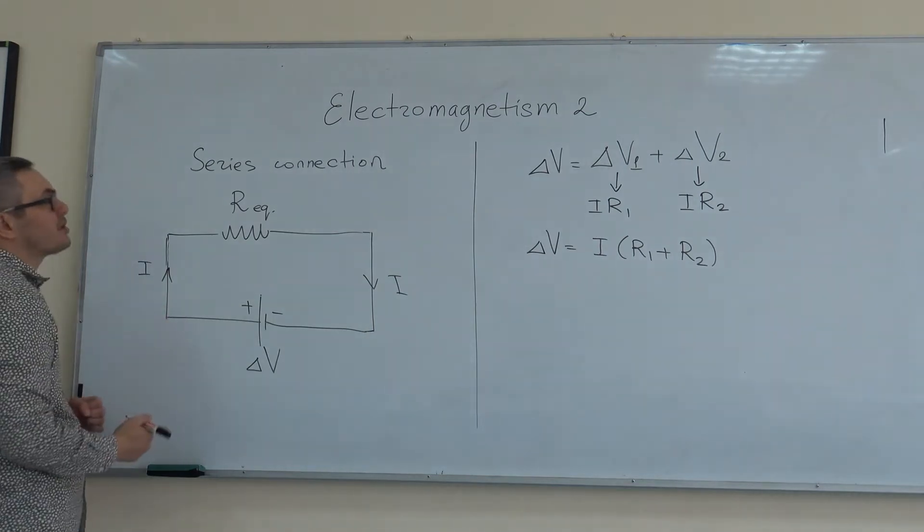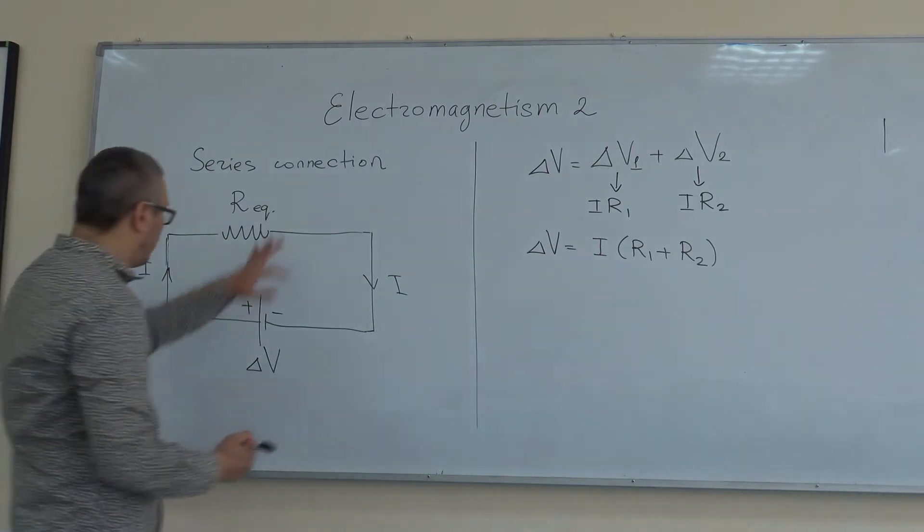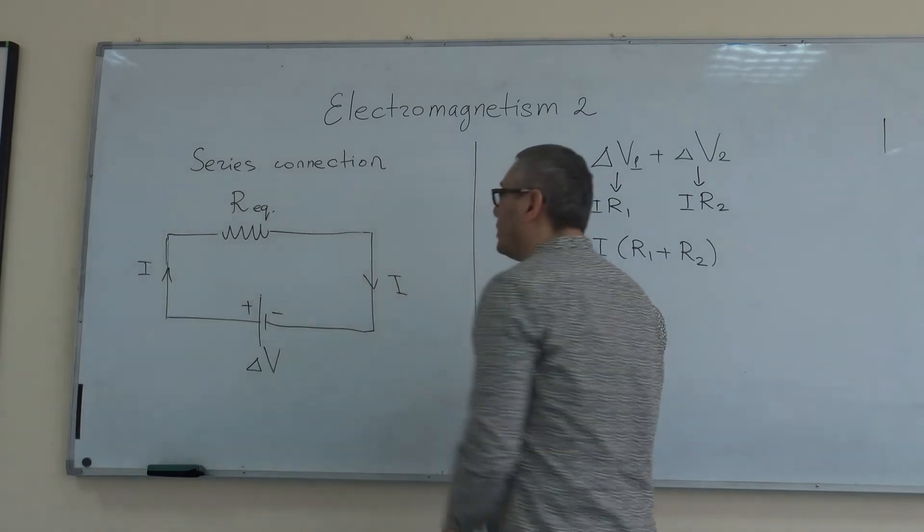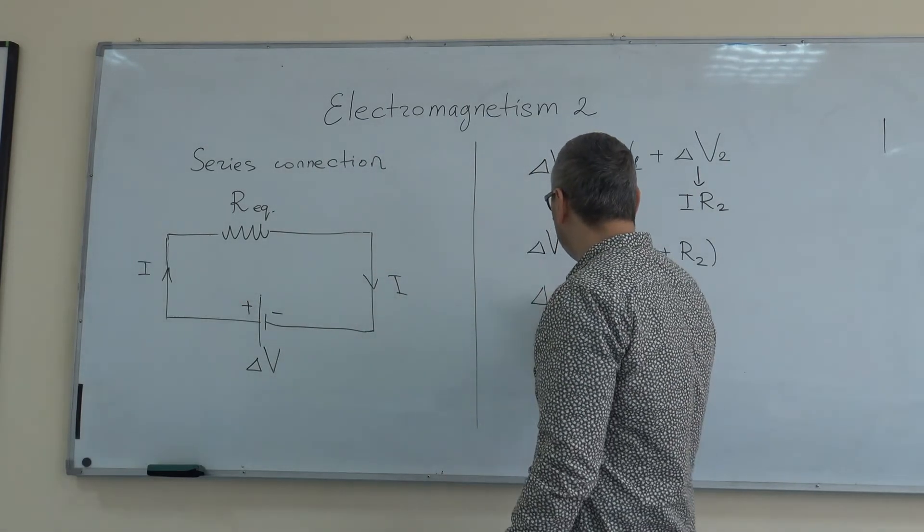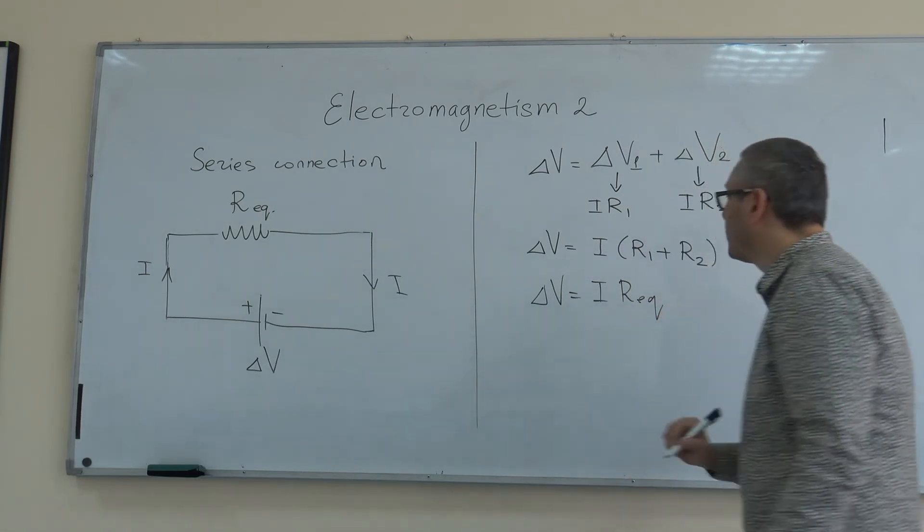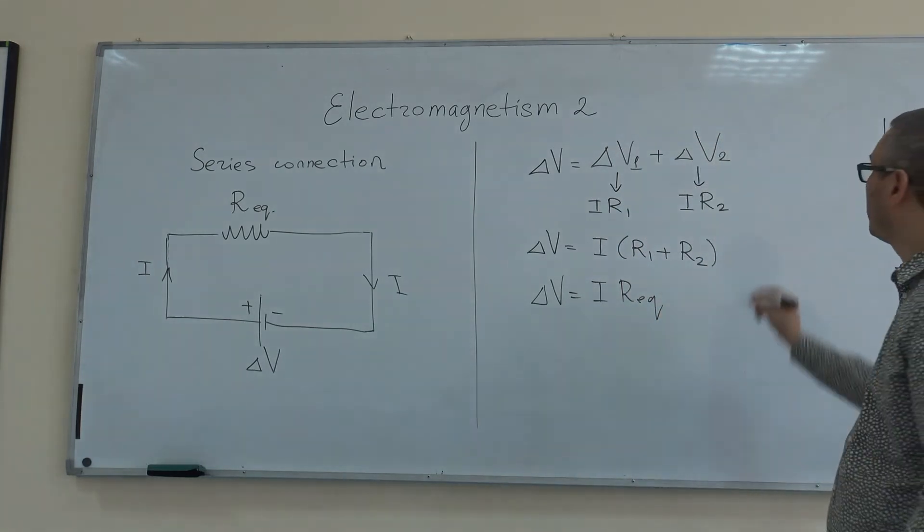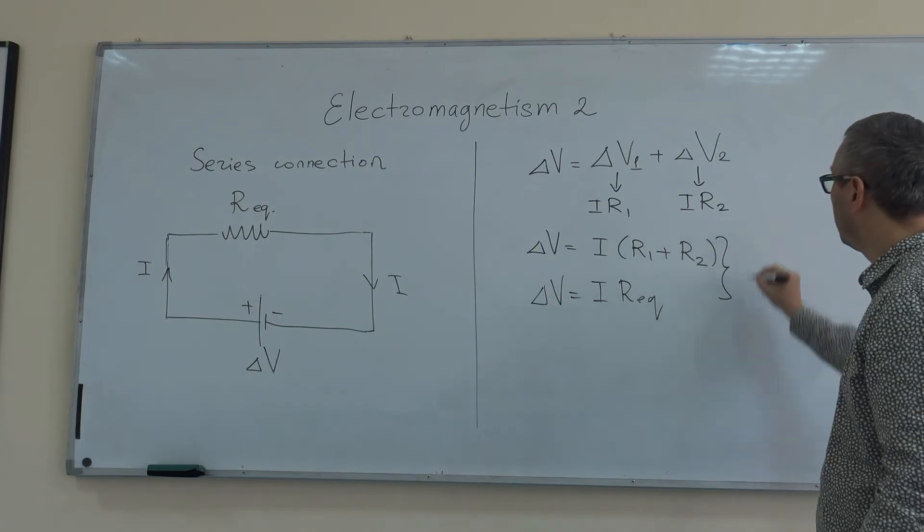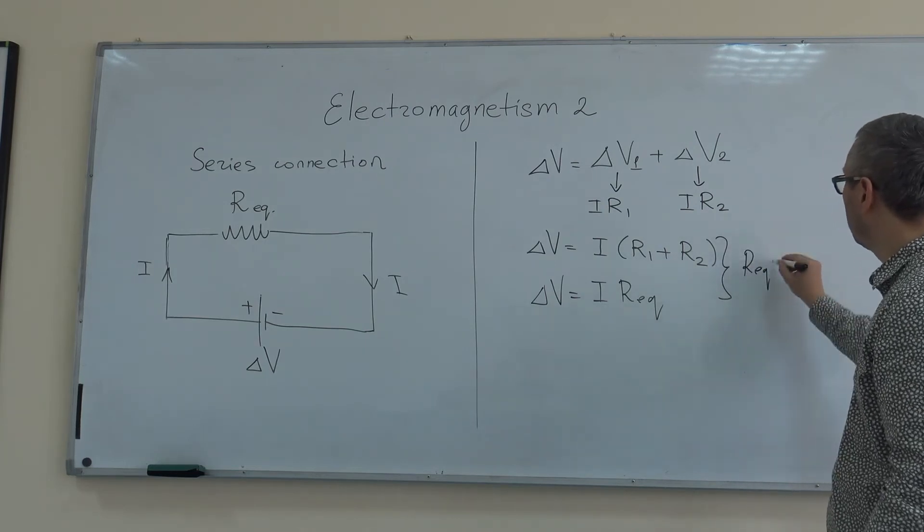We can apply Ohm's law here again. By looking at this, you can see that Delta V is also equal to I times R equivalent. The conclusion you make from here is that R equivalent is equal to R1 plus R2.